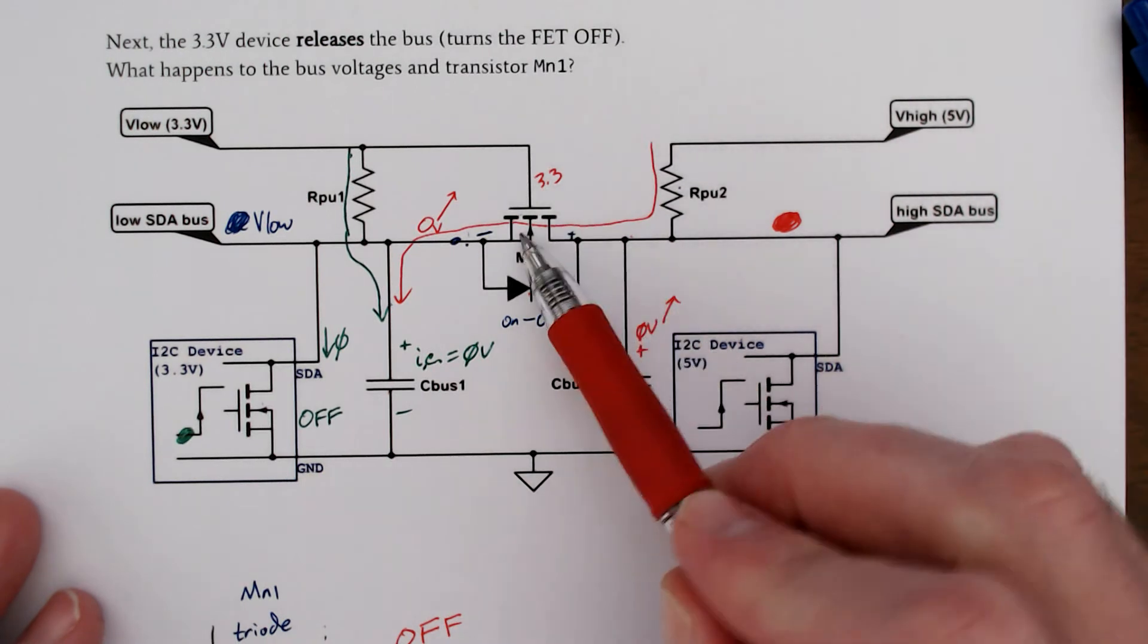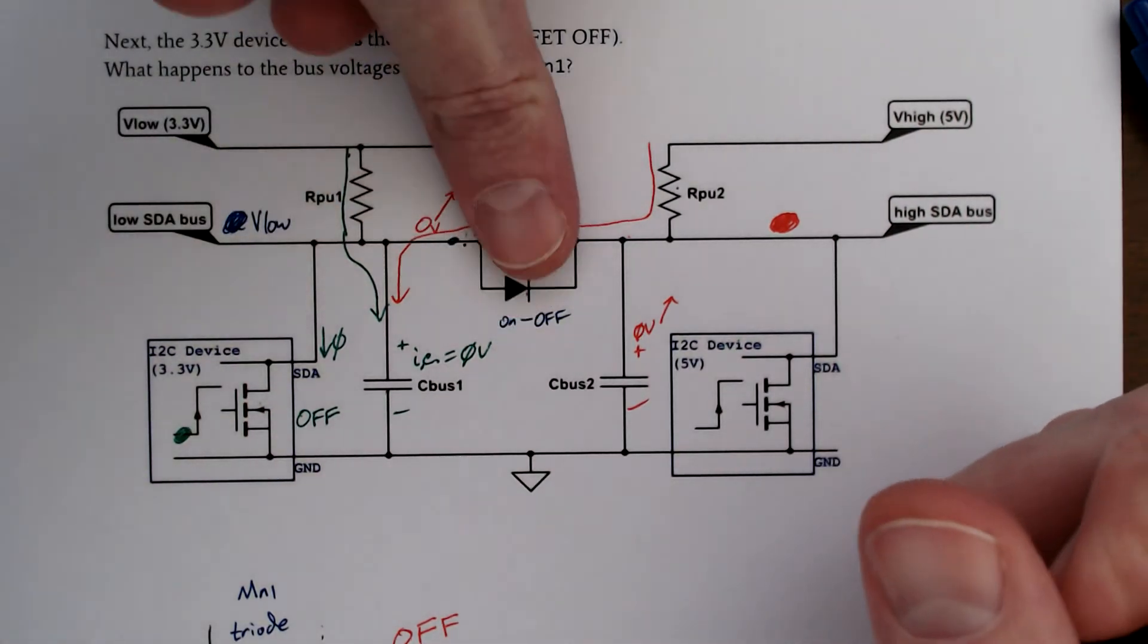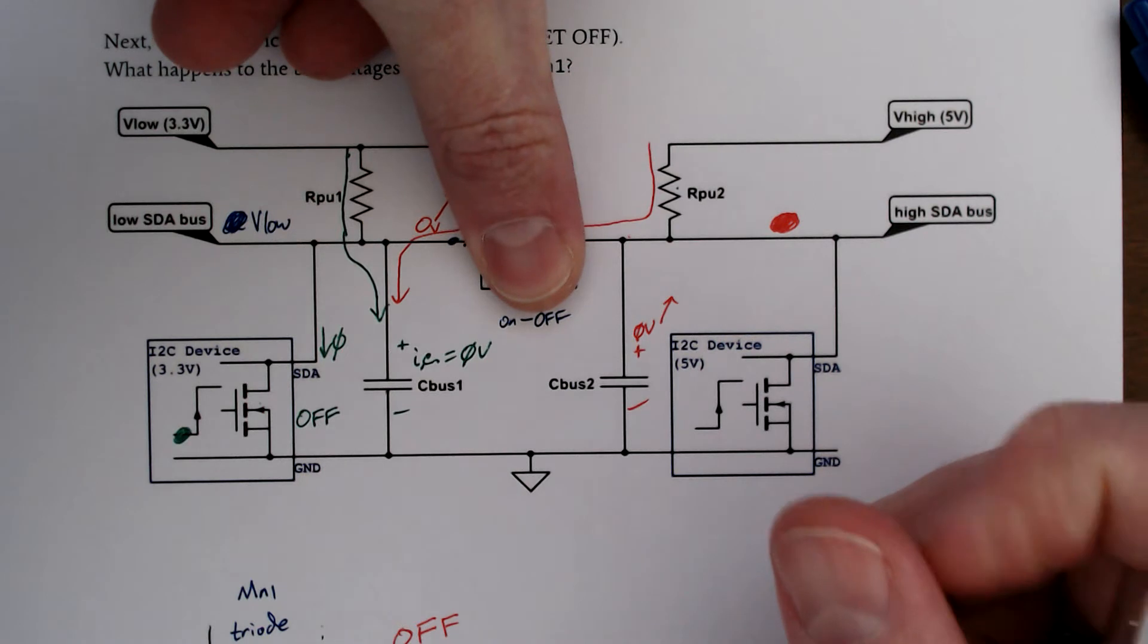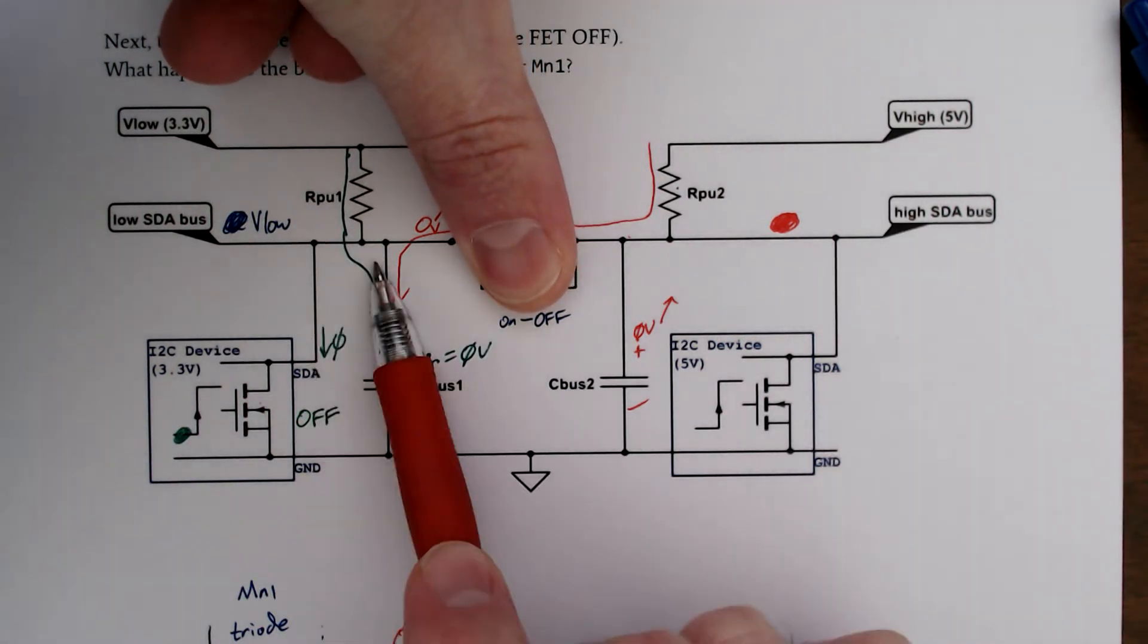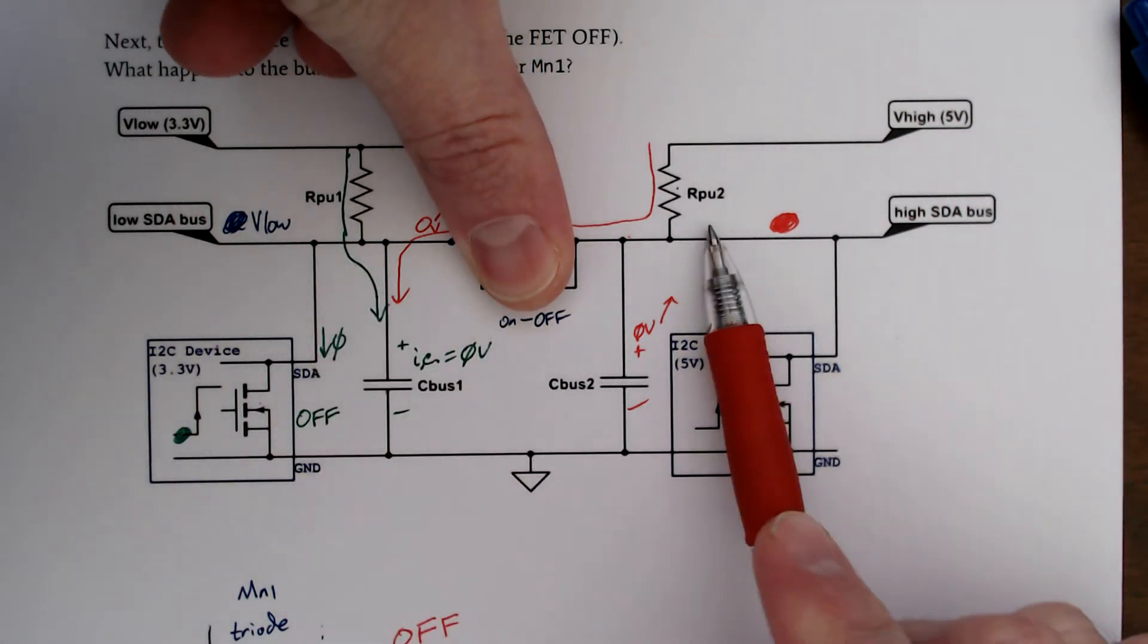When that MOSFET is turned off, there's no connection. Our diode still remains reverse biased. And now I see just an RC circuit. I see another RC circuit, and they're going to be independent of each other.